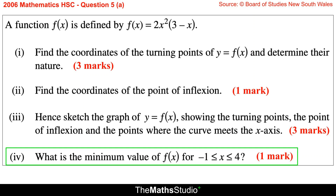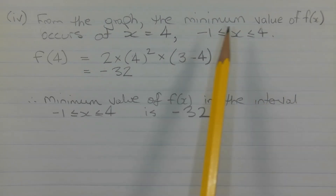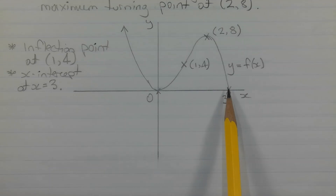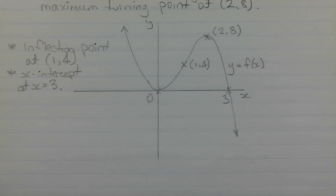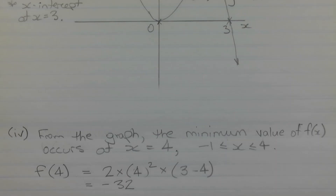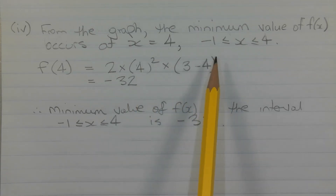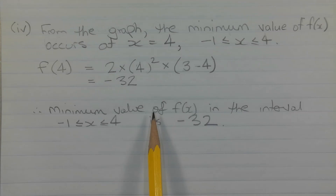Part 4: What is the minimum value of f(x) for −1 ≤ x ≤ 4? From the graph, for values of x ≤ 3 the y-values are ≥ 0, but for x > 3 the y-values are negative, so the minimum occurs at x = 4. Calculating f(4) = 2 × 4² × (3 − 4) = −32. Therefore the minimum value of f(x) on the interval −1 ≤ x ≤ 4 is −32.